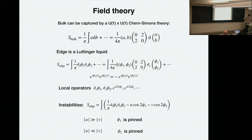So the Luttinger liquids are generally not stable — you can add a term that induces instability towards a gapped phase. You have to write them in terms of local operators: either cos(2φ_1) or cos(2φ_2). If you only have cos(2φ_1), that term will pin φ_1 to some minimum of the cosine potential. If you have the other, φ_2 is pinned. That corresponds to the two types of gapped boundaries in the toric code.